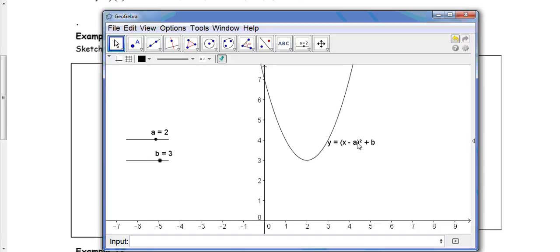So here we have the graph of x minus 2, inside brackets, all squared, plus 3.